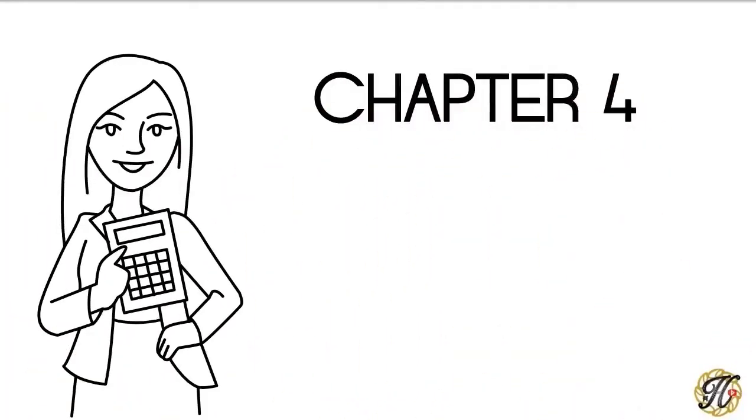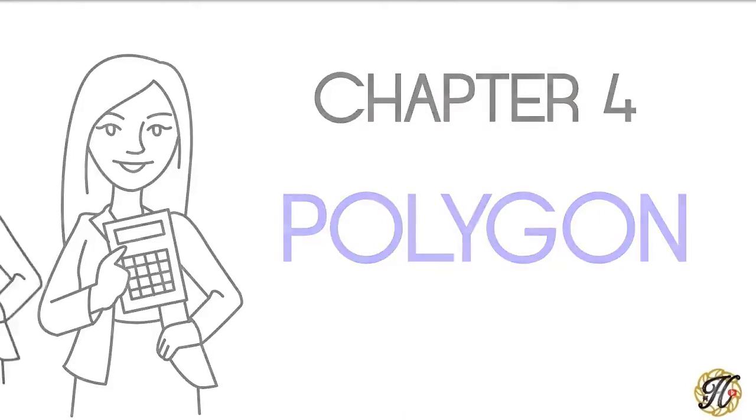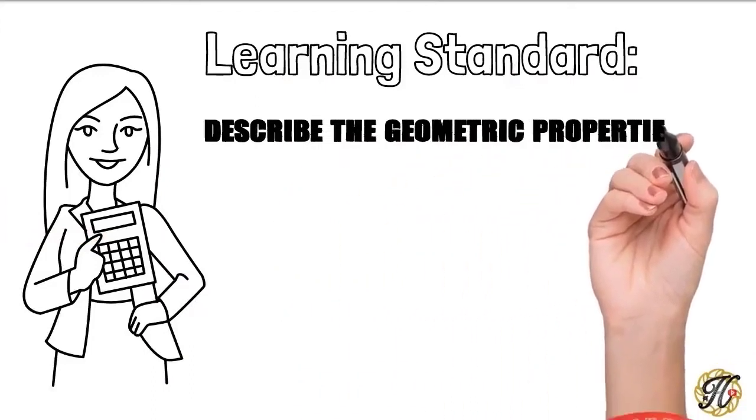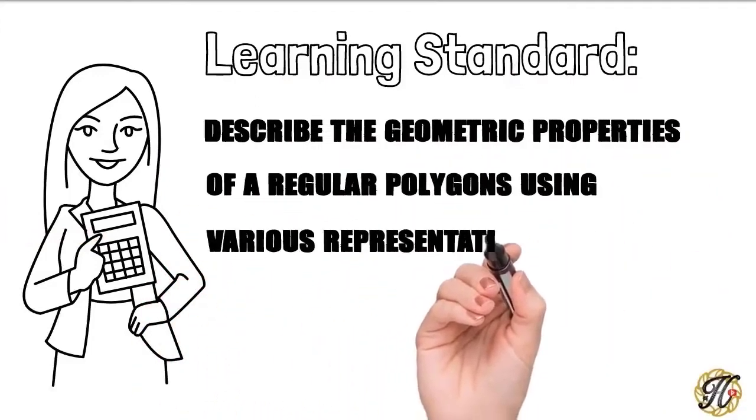Chapter 4 Polygon. Learning Standard: describe the geometric properties of irregular polygons using various representations.